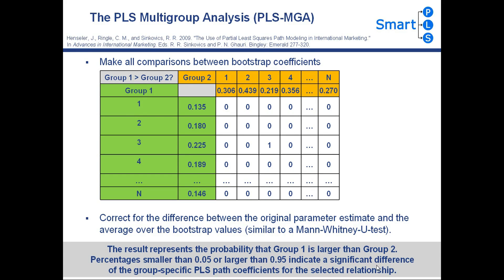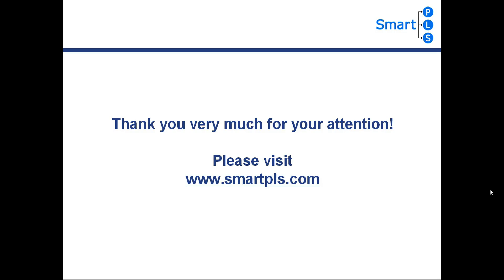The final result of the PLS-MGA is a percentage value. Again, we interpret very low percentages of 0.05 and lower, or large percentage values of 0.95 and higher, as a significant difference of group-specific PLS path coefficients for the selected relationship. Thank you very much for your attention. Enjoy using SmartPLS and please visit our webpage at www.smartpls.com.